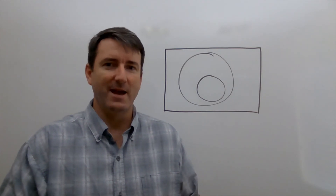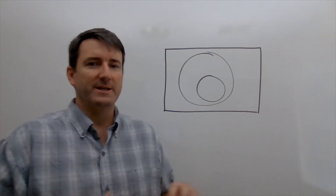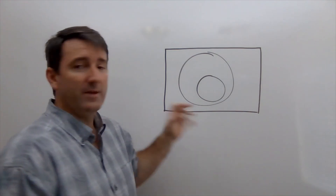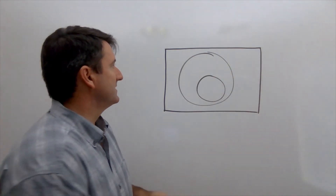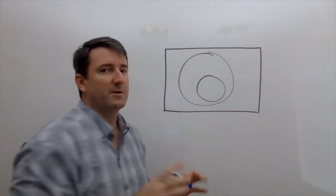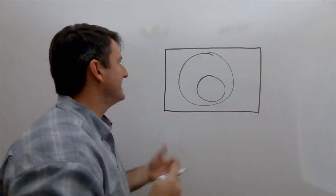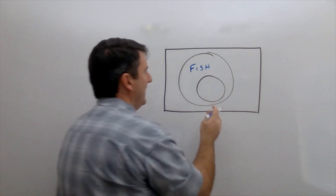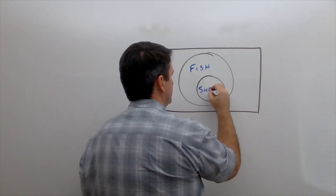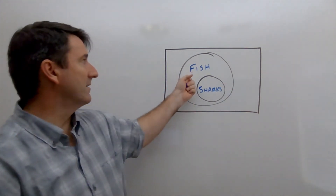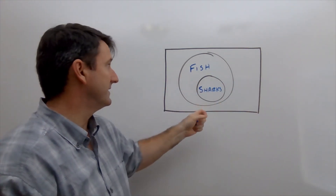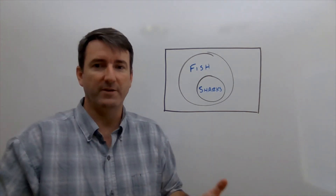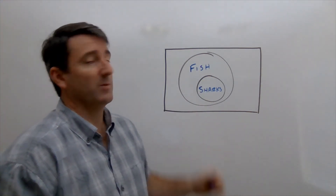Finally, here's one last example — not in your notes — showing a Venn diagram representing a subset. We have a rectangle with a larger circle and a smaller circle completely inside the other. For instance, the big circle represents the set of all fish and the smaller circle represents the set of all sharks. There are fish that are not sharks, but every shark is also a fish — there are no sharks that are not fish. So sharks are a subset of fish, and that's how we draw that Venn diagram.